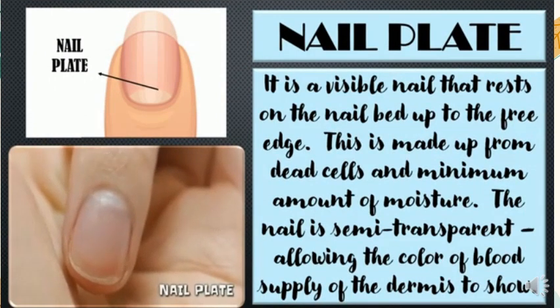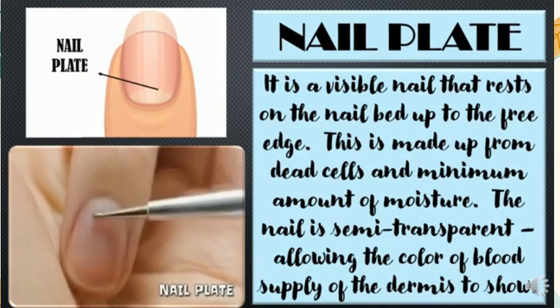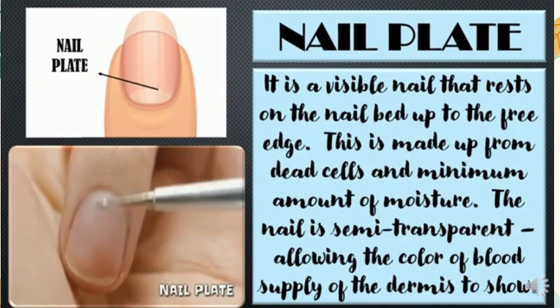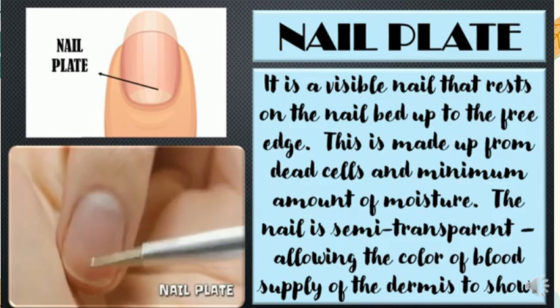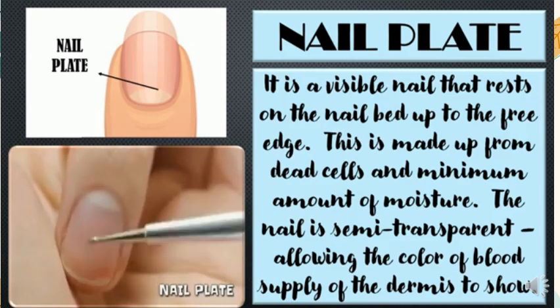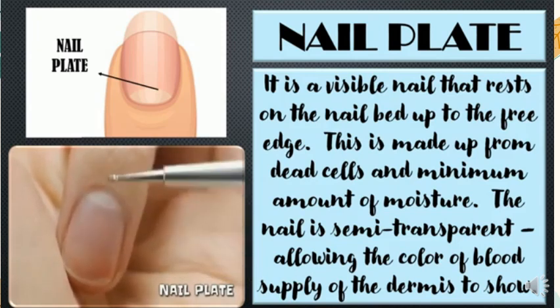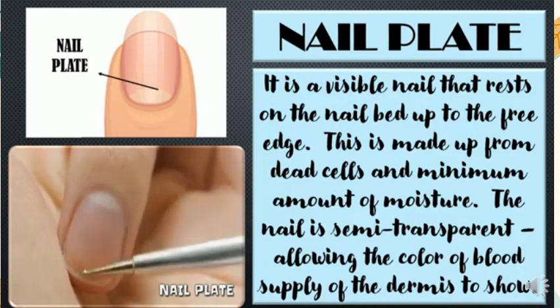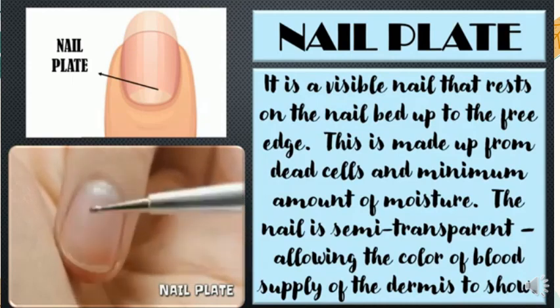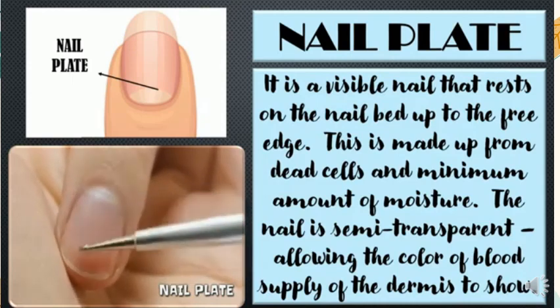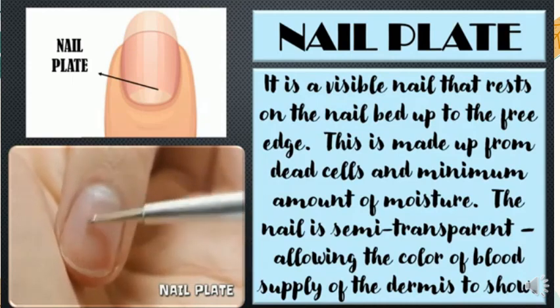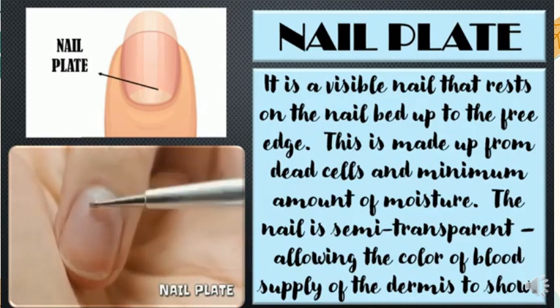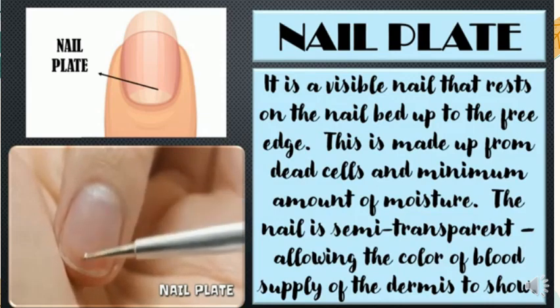Nail plate — the visible nail that rests on the nail bed up to the free edge. This is made up of dead cells and a minimum amount of moisture. The nail is semi-transparent, allowing the color of the blood supply of the dermis to show through.